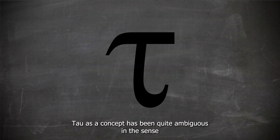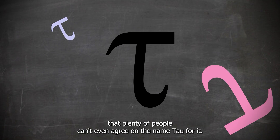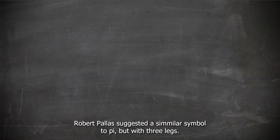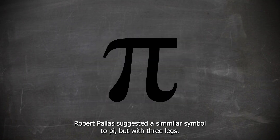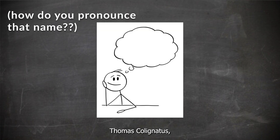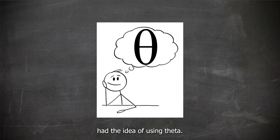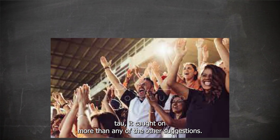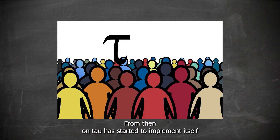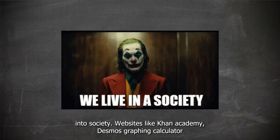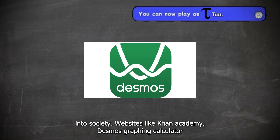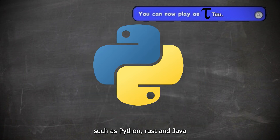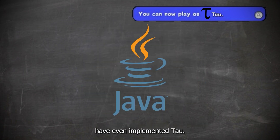Actually, Tau as a concept has been quite ambiguous — plenty of people can't even agree on the name Tau for it. People have proposed the term "turn." Robert Palais suggested a simpler symbol similar to pi but with three legs. Thomas Caliganus had the idea of using theta. But when Michael Hartl suggested the Greek letter Tau, it caught on more than any of the other suggestions. From then on, Tau has started to implement itself into society. Websites like Khan Academy, Desmos Graphing Calculator, and even Google have made Tau available to use, and programming languages such as Python, Rust, and Java have even implemented Tau.